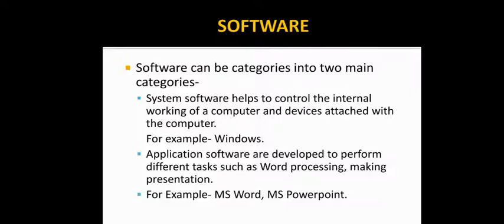Now, what are the types of software? There are basically two types of software available. First one is your system software and second is your application software. System software helps to control the internal working of a computer. A particular kind of software by which we can do all the internal tasks or internal working of a computer.